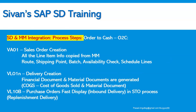SD and MM integration process steps, especially in the order-to-cash flow — where exactly we meet together. VA01: the moment we create a sales order, all the line item information is copied from material master data — route, shipping point, batch determination, availability check determination, schedule lines, and category determination will happen. VL01N transaction: when we create a delivery and click on PGI (post goods issue), when all the settings are in place, the system will generate two documents after the PGI. One is the cost of goods sold account — that is a financial document, which is part of the MM side — and the material document (MB03) from the MM side.